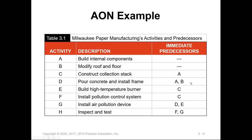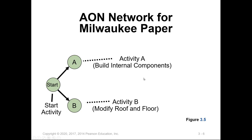We will take a detailed example using the activity on the node approach. We have a series of eight activities named and described as given in the table. The predecessors are listed in the last column. The predecessor list provides the list of activities required to be completed to start the next activity. Based on the table, both activities A and B can start at the same time, and we are using the activity on node network diagram as an example.